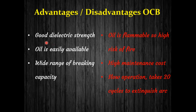The main advantages of OCBs are that oil has good dielectric strength, making it suitable for high voltage operation; oil is easily available; and the OCB has a wide range of breaking capacity. The disadvantages are that oil is flammable, posing a high risk of fire; it requires higher maintenance cost; arc quenching operation is slow, taking around 20 cycles to extinguish the arc.